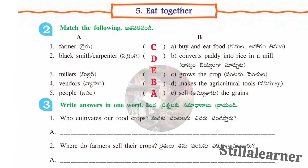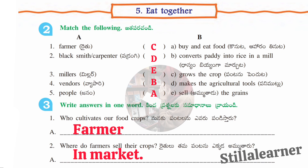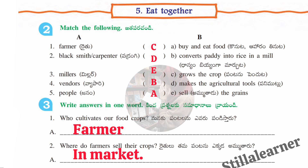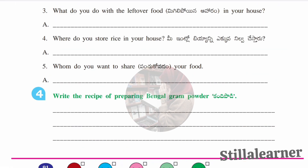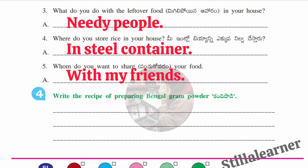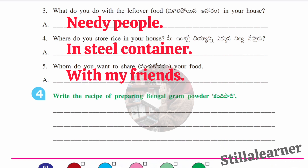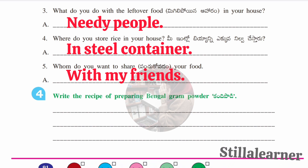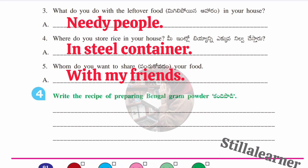The third section is one-word answers. Who cultivates our food crops? — Farmer. Where do farmers sell their crops? — In a market. What do you do with leftover food in your house? — Give it to the needy people. Where do you store rice in your house? — In a steel container or refrigerator. Whom do you want to share your food with? — With my friends.